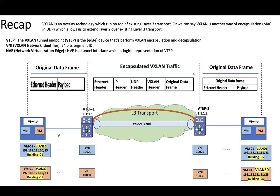Overall we can say VXLAN is another way of encapsulating MAC in UDP to extend a Layer 2 domain over Layer 3 transport. VTAP — VXLAN Tunnel Endpoint — is a device that is the start or endpoint of a VXLAN tunnel. VTAP is responsible for encapsulating and decapsulating the traffic. As per this diagram, VTAP 1 is encapsulating the traffic and VTAP 2 is decapsulating the traffic.